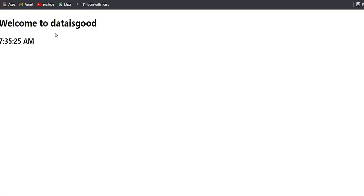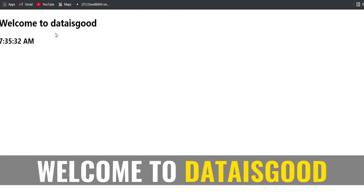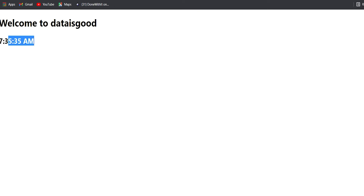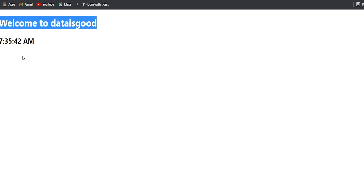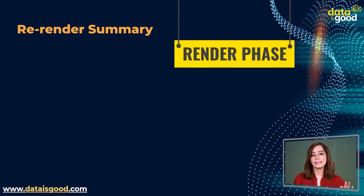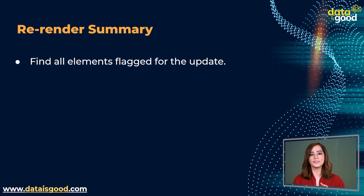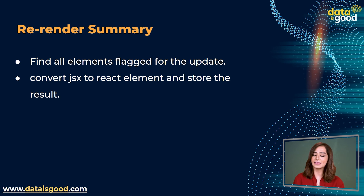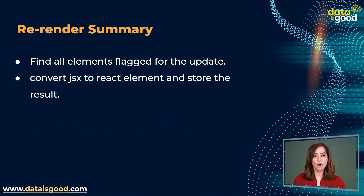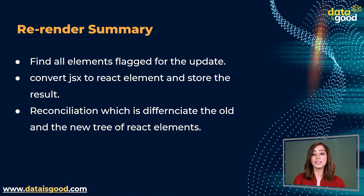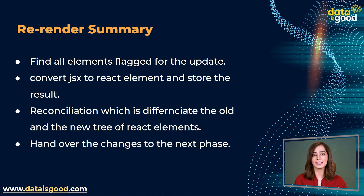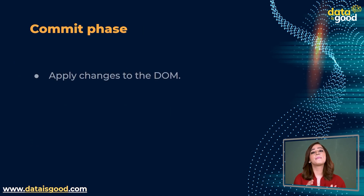The virtual DOM then updates only what is required. In this example, the time is the only thing that changes each second — not the title, which is 'Welcome to Data is Good'. Thus React only updates the time itself, making it much more efficient than conventional DOM manipulation. To summarize re-rendering: in the render phase, React finds all elements flagged for updates; for each flagged component, it converts JSX to React elements and stores the result; React then performs reconciliation, differentiating the old and new tree of React elements — also known as the virtual DOM — then hands over the changes to the commit phase, where changes are actually applied to the DOM.